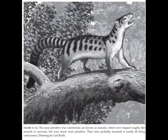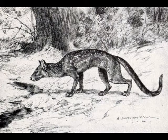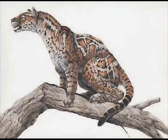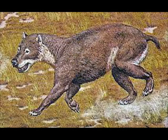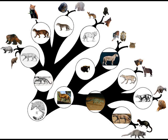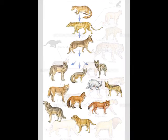Die frühesten und urtümlichsten Vertreter der Carnivora — der Ordnung, zu denen Hunde, Katzen, Marder und Bären gehören — waren die Miaciden, die ihrer äußeren Erscheinung nach einem Wiesel ähnelten, bei genauerer Betrachtung jedoch Merkmale aufwiesen, die alle Carnivora gemeinsam haben. Aus solchen Stammformen entwickelten sich weitere Linien, wie die Gattung Hesperocyon — dem frühesten Vertreter der Hundeartigen — dessen Merkmale noch so ursprünglich waren, dass er nur wenig von den Vertretern der frühesten Katzenartigen, wie Proailurus und Pseudelurus, zu unterscheiden ist. Gattungen wie Hemicyon, bei oberflächlicher Betrachtung einem Hund ähnlich, führten zu den heutigen Bären.